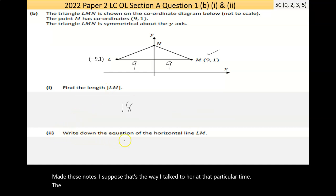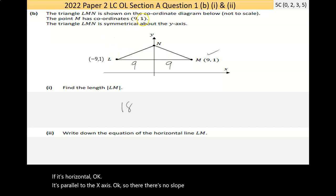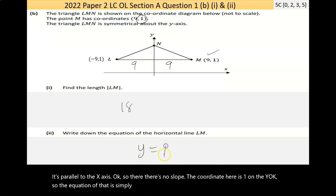Now, part two says write down the equation of the horizontal line LM. Now, if it's horizontal, it's parallel to the x-axis, so there's no slope. The coordinate here is 1 on the y, so the equation of that is simply y is equal to 1.